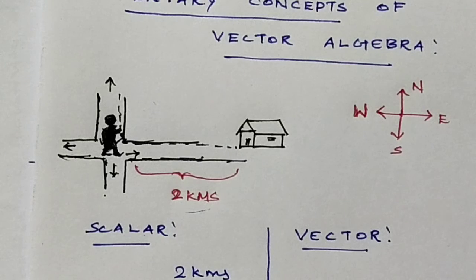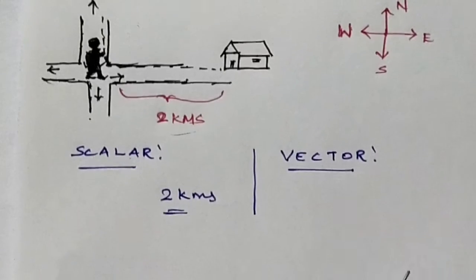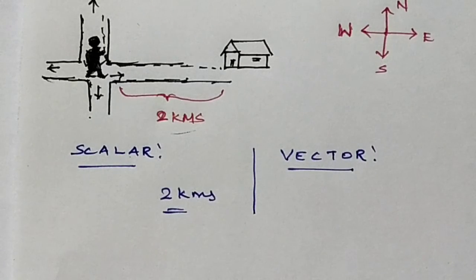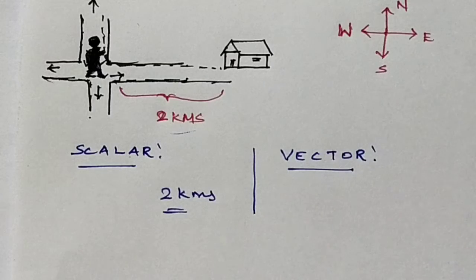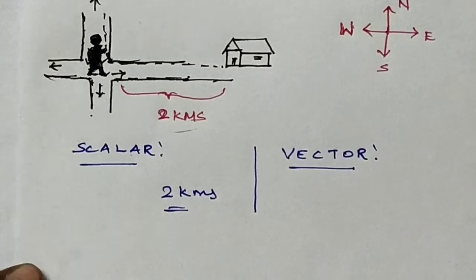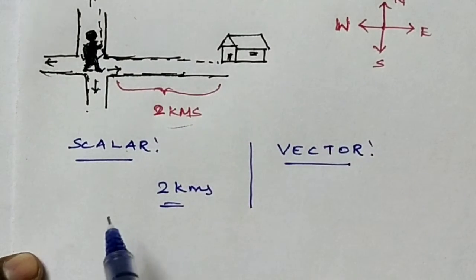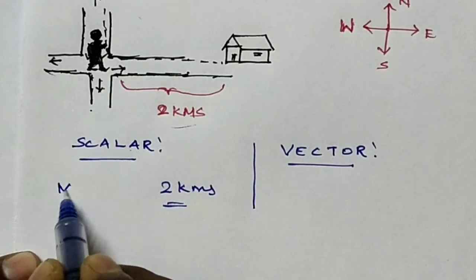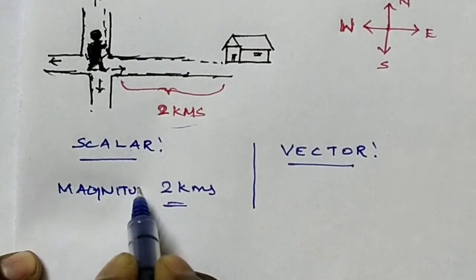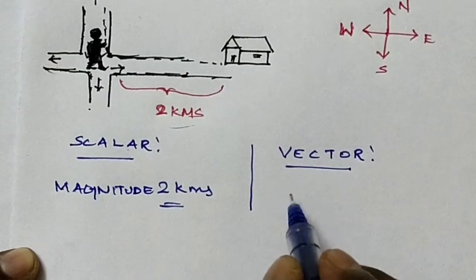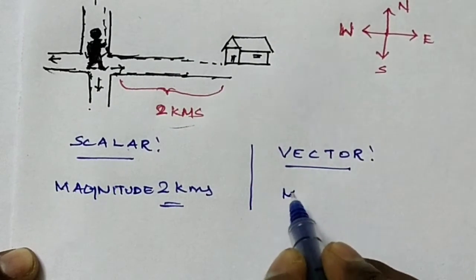Suppose that person moves north, west, or south — they would not reach home. So direction is very important here. That person must move in the east direction only; after two kilometers, they reach home. Therefore, a vector is a quantity described by both magnitude and direction. Scalar uses only magnitude, but vector uses both magnitude and direction.